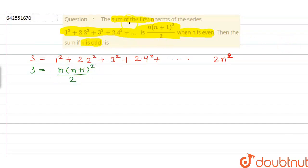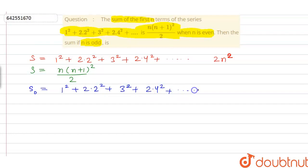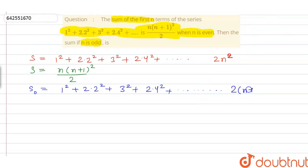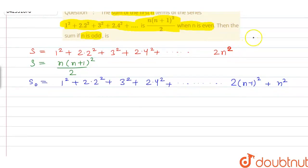We have to figure out the value of the sum of the series when n is an odd number. Let us write our series — this time it is equal to S_naught. S_naught is equal to 1² + 2·2² + 3² + 2·4² and so on, where the last second term becomes 2(n-1)², and the last term would be n², since n is an odd number.